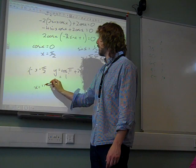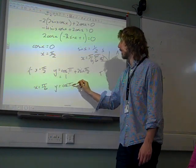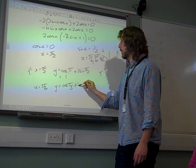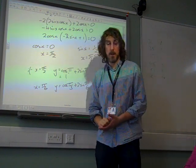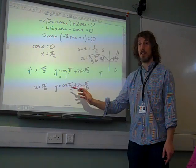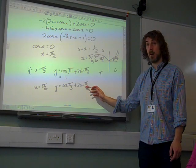So if x is pi by 6, y is cos of pi by 3, plus 2 sin pi by 6, sorry. And that is, well that's quite nice, isn't it, cos of pi by 3 is a half. Sin of pi by 6 is a half, so a half plus two halves would be 3 over 2.